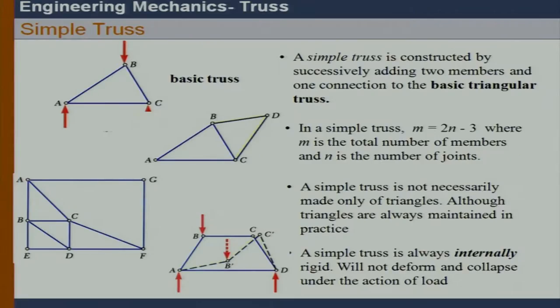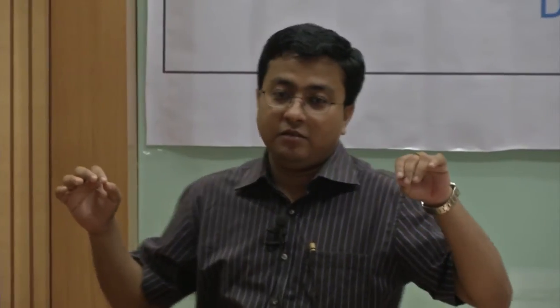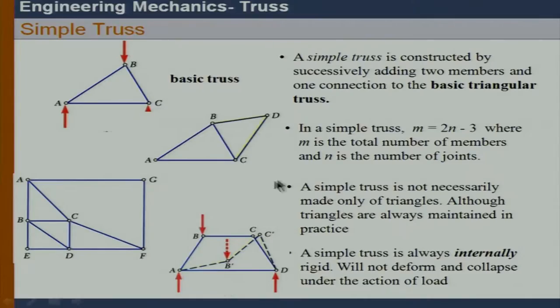The first thing to understand is: what is a simple truss? A simple truss is simply a triangle connected by pins — that is the basic truss. The basic truss is always going to be a triangle. From the basic truss, we can construct the main trusses, which we will call the simple truss.